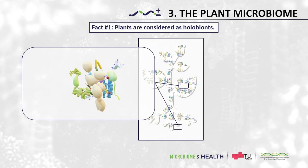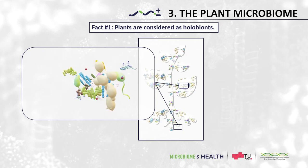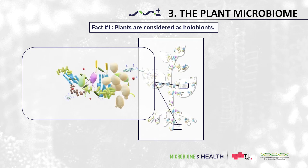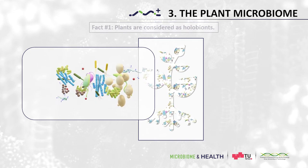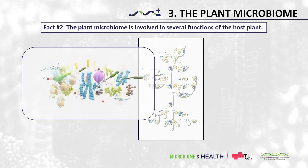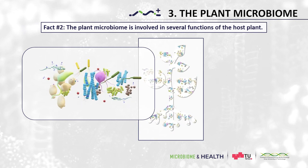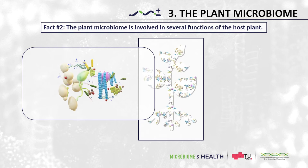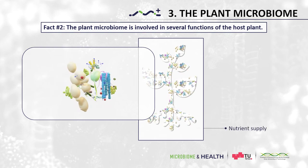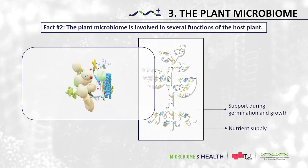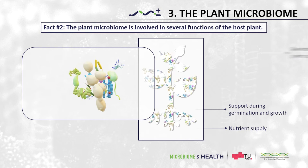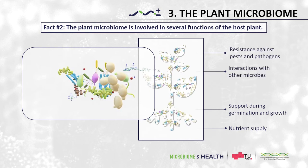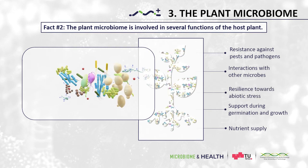The term holobiont describes an assemblage of the eukaryotic host and many other species which together form an ecological unit. Fact number two: the plant microbiome is involved in several functions for the host plant. These functions include nutrient supply, support during germination and growth, resistance against pests and pathogens, interactions with other microbes and resilience towards abiotic stress.